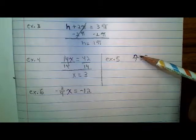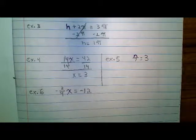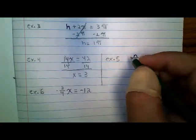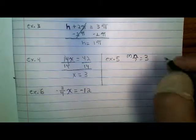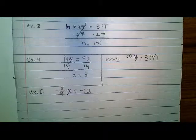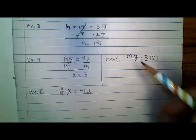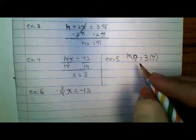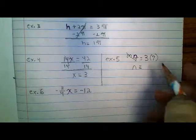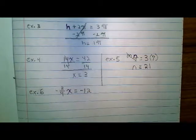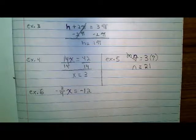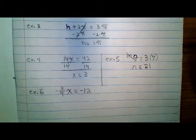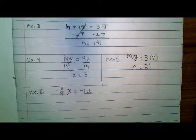Example 5, we're solving for n. It's n divided by 7 equals 3. We have division here because of the fraction bar. The opposite of division is multiplication, so we're going to multiply both sides by 7. In all of these examples, notice that I've done the same operation to both the left and right sides. That's important because we want balance — if we do something to one side and not the other, they're no longer equal.